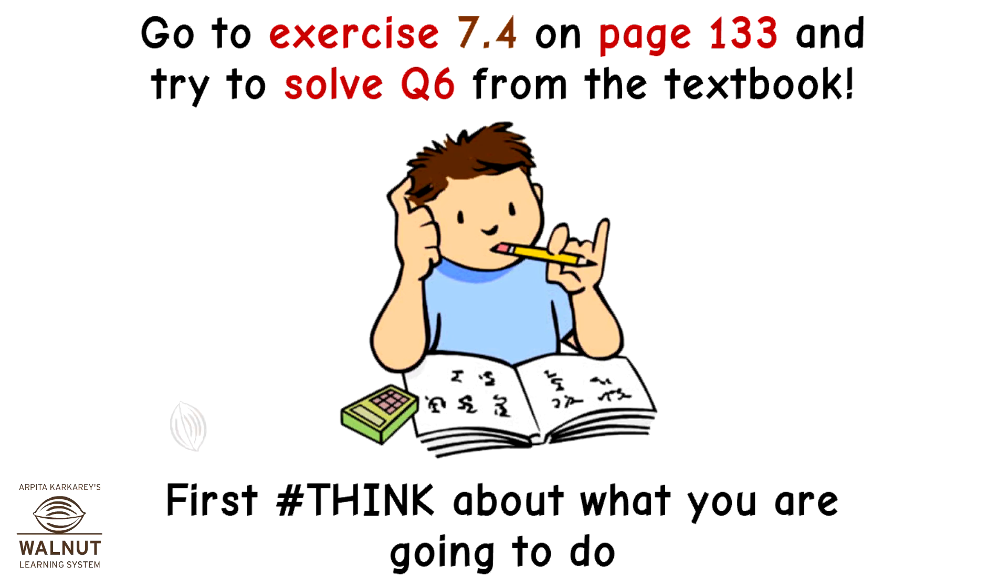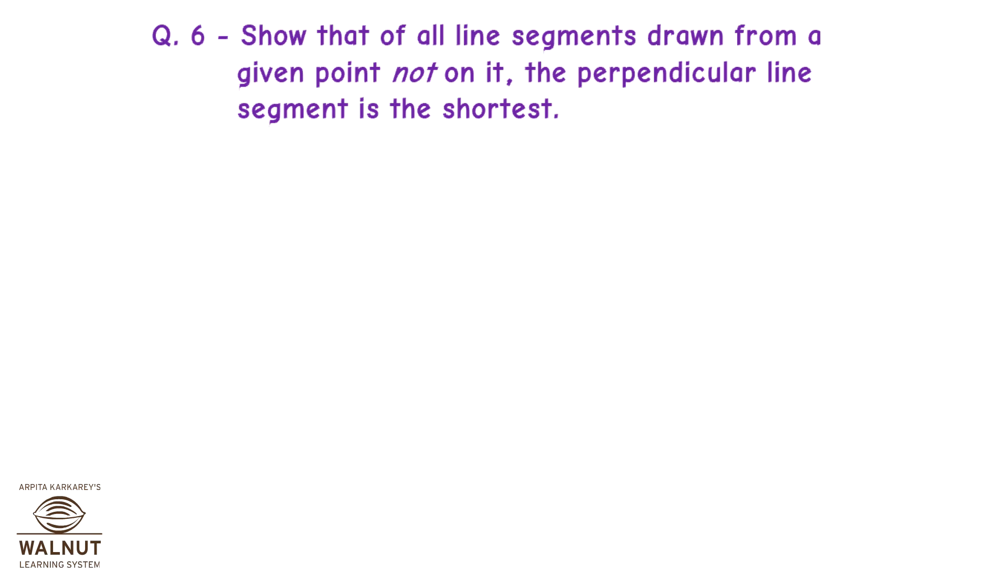Go to exercise 7.4 on page 133 and try to solve question 6 from the textbook. First, think about what you are going to do. Question 6: Show that of all the line segments drawn from a given point not on it, the perpendicular line segment is the shortest.